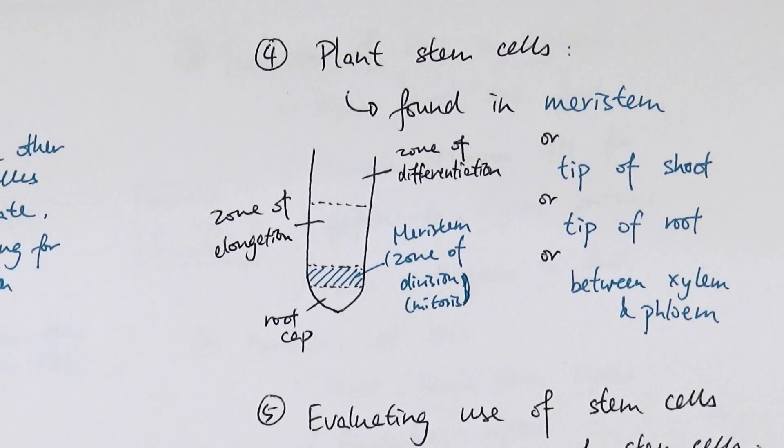Leading from that point is about, okay, specifically plant stem cells. Most people know where to find animal stem cells or in adults, which is in the bone marrow.